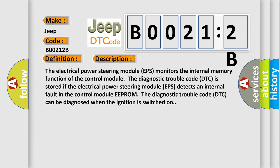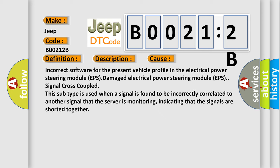This diagnostic error occurs most often in these cases: incorrect software for the present vehicle profile in the electrical power steering module EPS, damaged electrical power steering module EPS, or signal cross-couple. This subtype is used when a signal is found to be incorrectly correlated to another signal that the server is monitoring, indicating that the signals are shorted together.